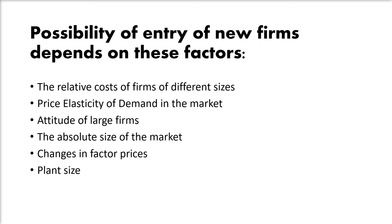There are also changes in factor prices: an increase in factor price will increase the costs and the limit price in the industry, and vice versa. Finally, the plant size: the size of the plant depends on technology and technical changes. If the smallest firm has a large plant size, the other firms in the industry will have still larger plants, so the limit price set by the industry will be very high, thereby preventing the entry of new firms.